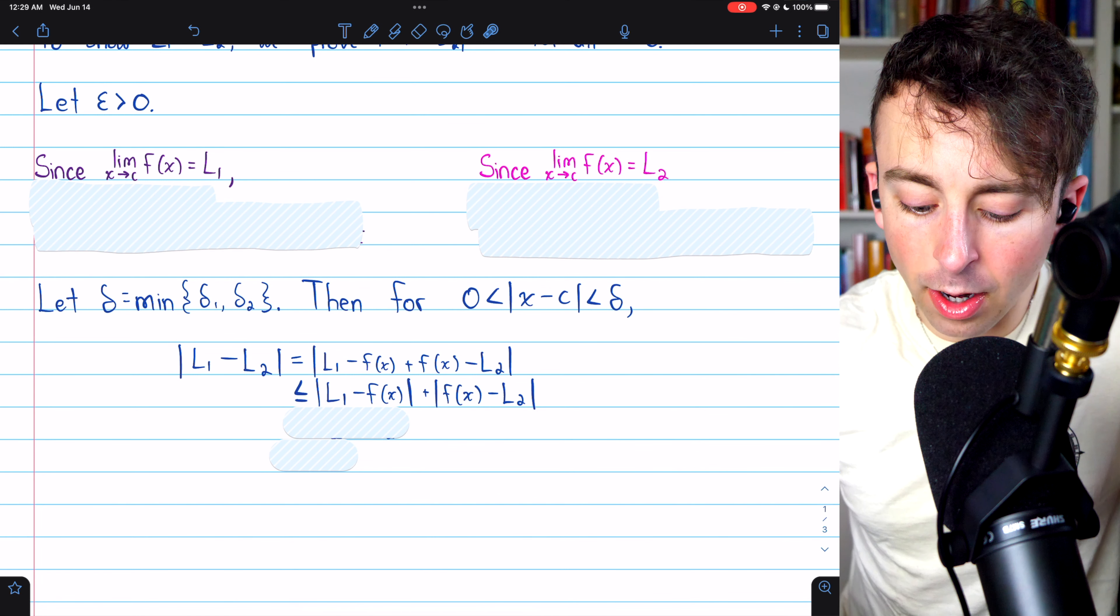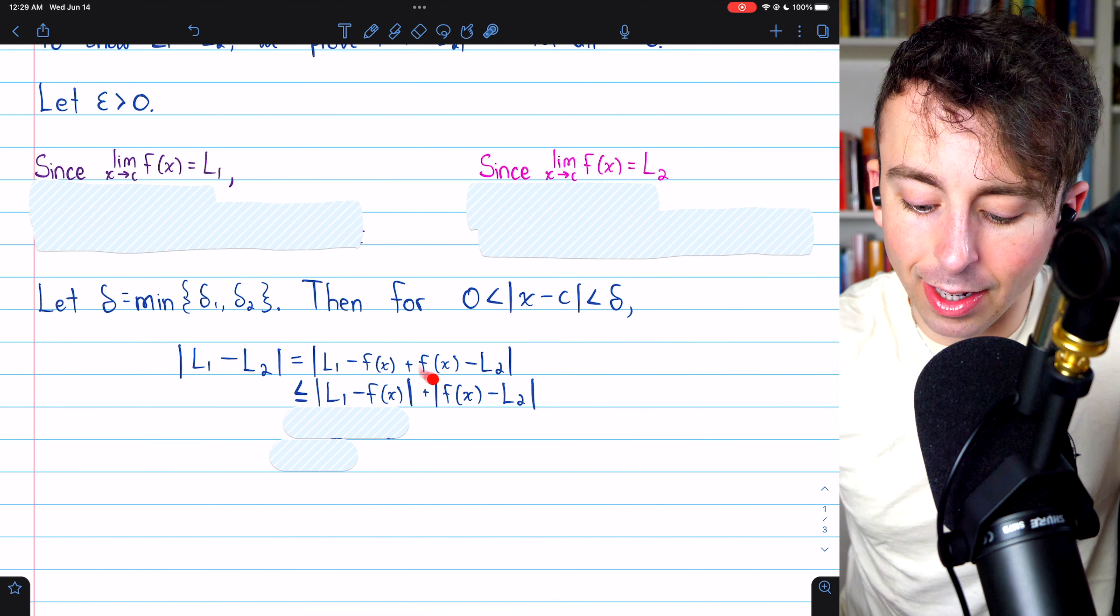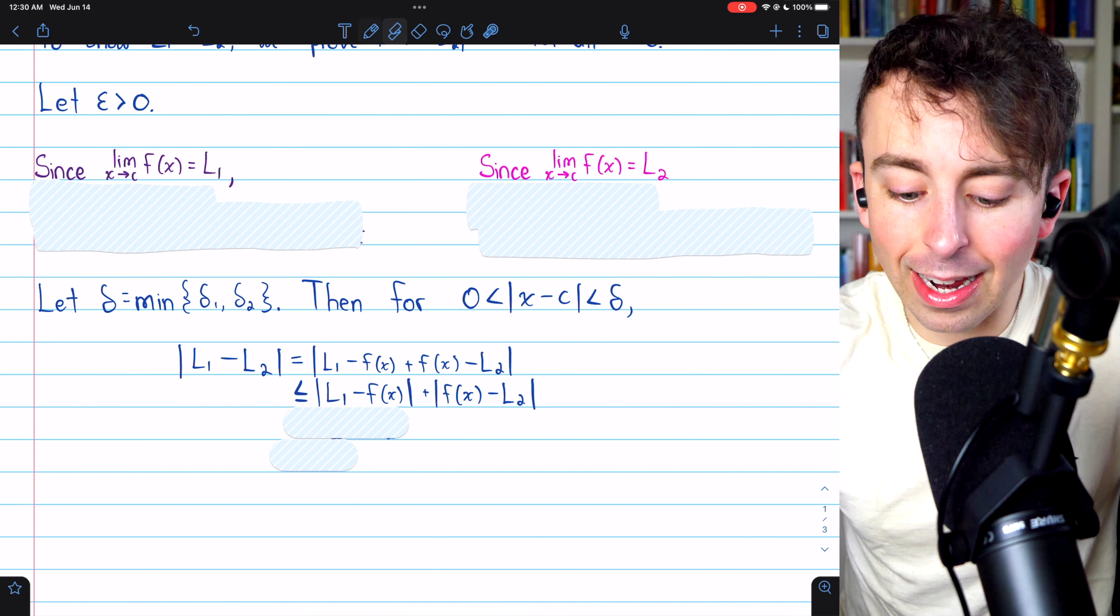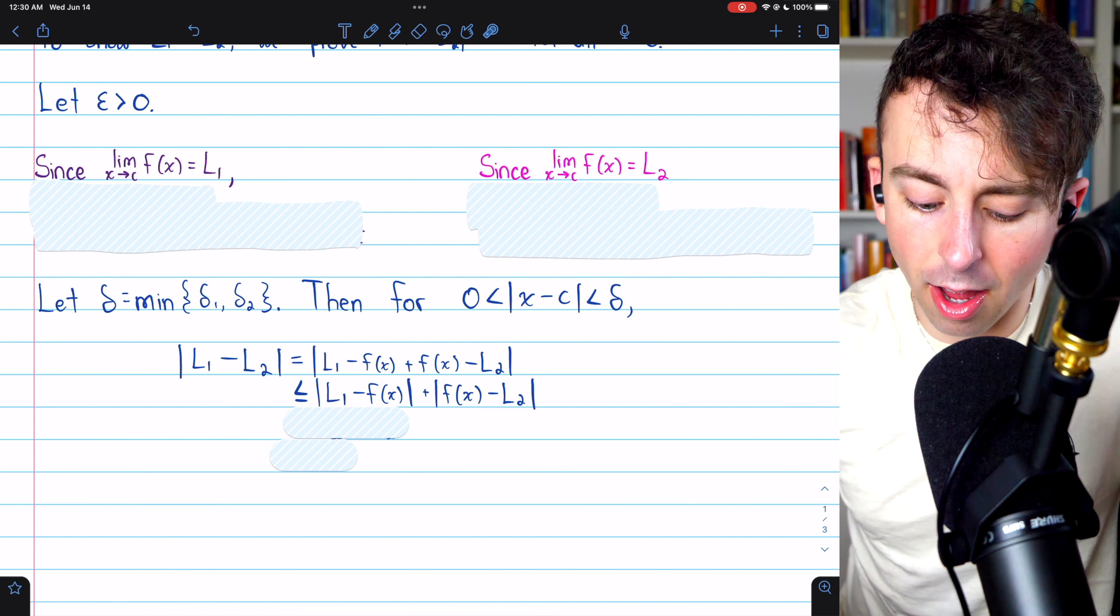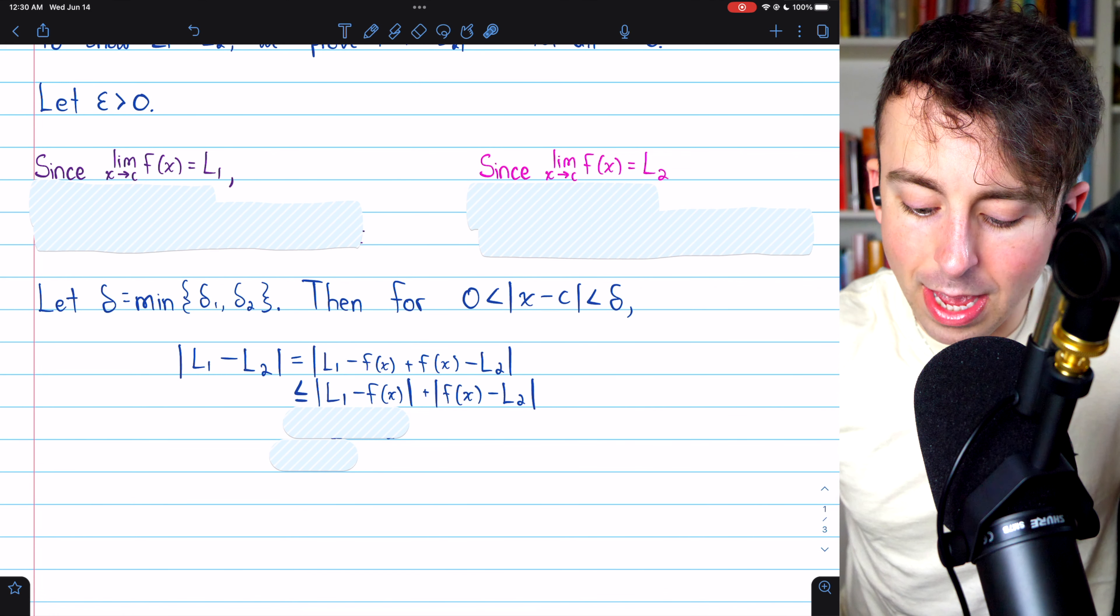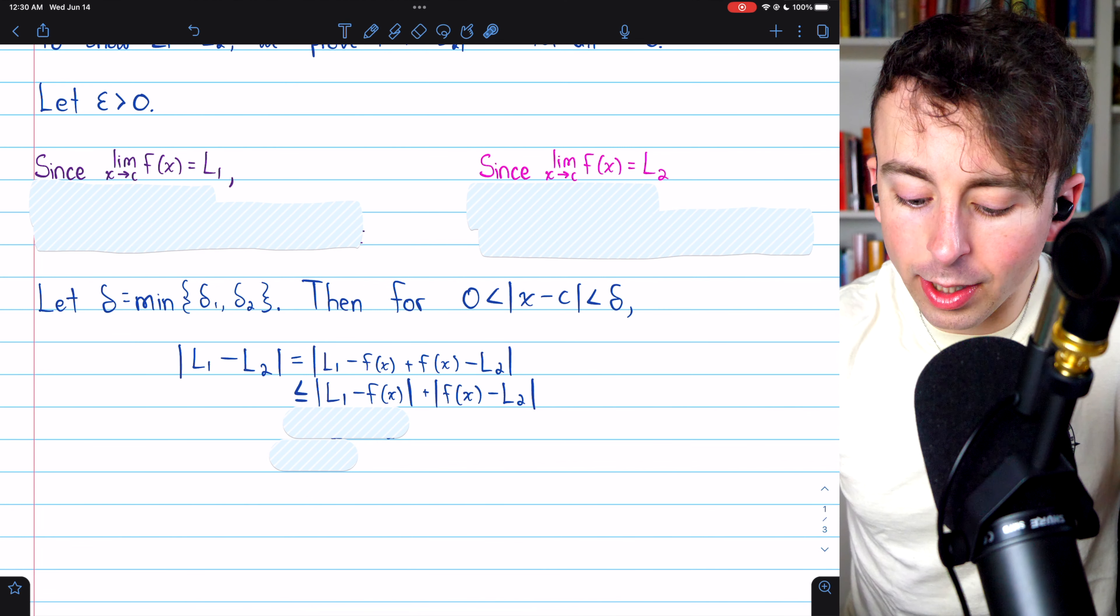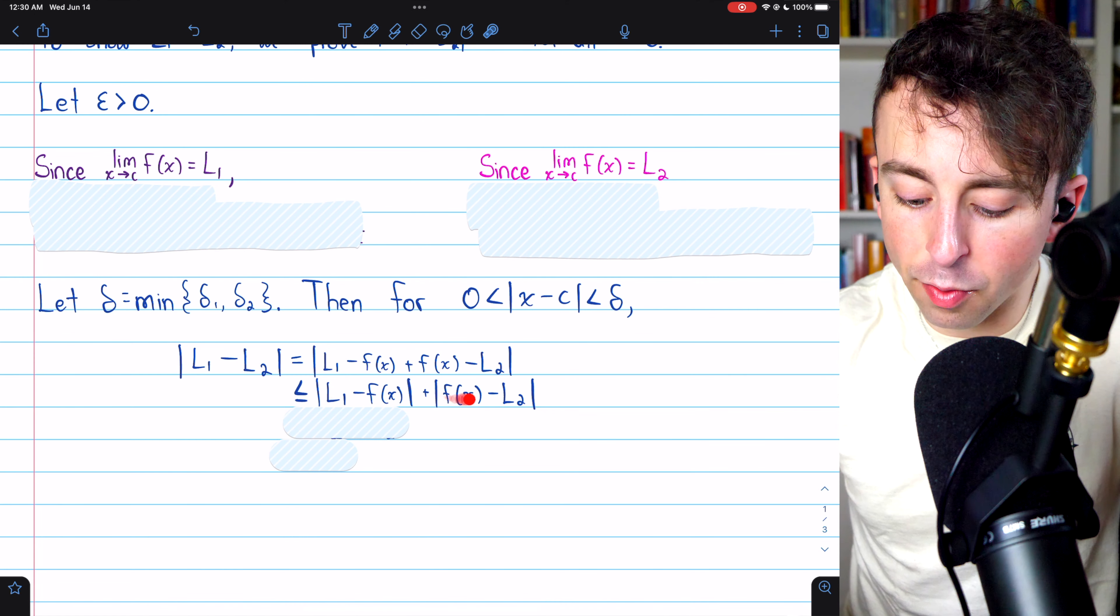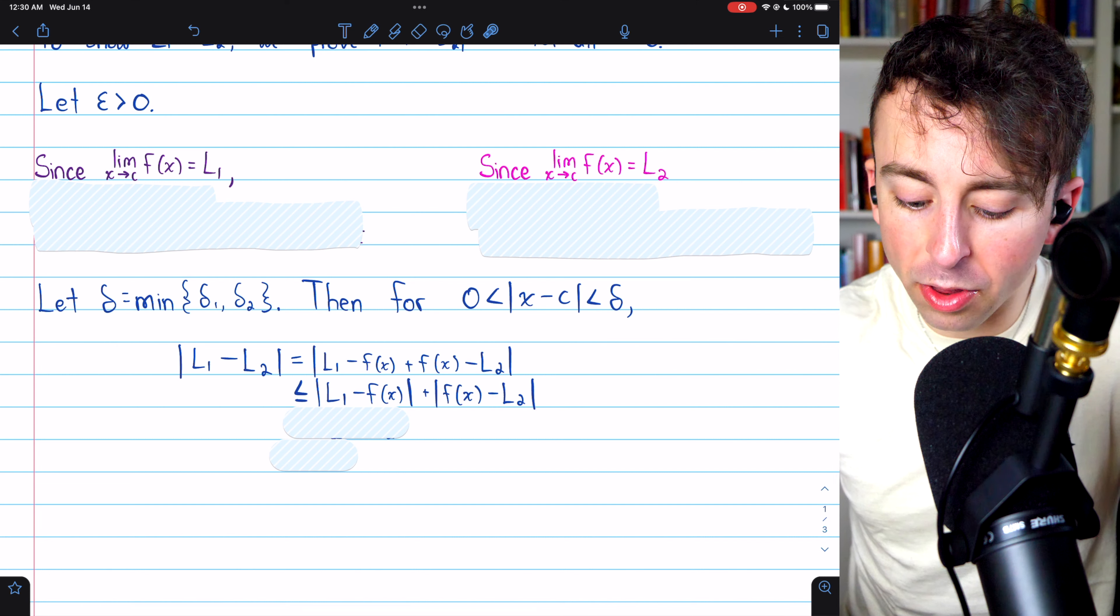In this way, we're just adding zero, so it's perfectly legitimate. This is equal to this. But now we have a sum. We have L1 minus f of X plus f of X minus L2. So, we can apply the triangle inequality theorem and split this across the sum. This absolute value of a sum must be less than or equal to the sum of the absolute values. And that application of the triangle inequality theorem to split this sum up into a sum of absolute values is critical,